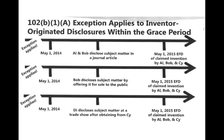Let's try some more. You file on May 1, 2015. If during that grace period Al and Bob disclose some subject matter in a journal article, that's fine. If Bob discloses it by himself or offers it for sale to the public, that's also fine — he's still one of the inventors within the grace period. Now, Di — who is not one of the inventors — disclosed the subject matter at a trade show after obtaining it from Psi. Looking at 102 B1A: disclosure was made by another who obtained the subject matter from an inventor — that's Di obtaining it from Psi. So that looks okay.